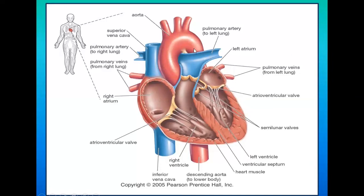Once the blood reaches the lungs, it becomes oxygenated because the lungs are the major organs of respiration and contain structures that facilitate gas exchange. After the blood becomes oxygenated, it moves via the pulmonary veins — which are attached to the lungs — back to the heart. The left atrium receives oxygenated blood. The main difference between the right and left atria is the type of blood entering each: deoxygenated enters the right, and oxygenated enters the left.